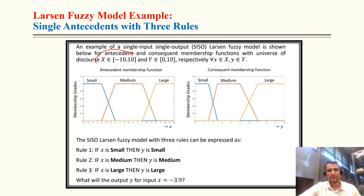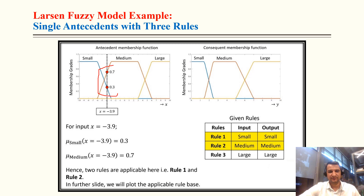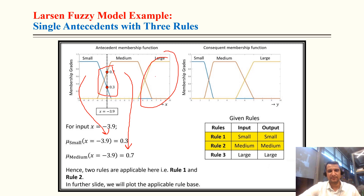Numerical example: universe of discourse for X is −10 to 10, for Y is 0 to 10. There are three rules: if X is small then Y is small; if X is medium then Y is medium; if X is large then Y is large. We calculate the output when X = −3.9. Degree of compatibility with small is 0.3, with medium is 0.7, and no compatibility with large, so only rules one and two are applicable.